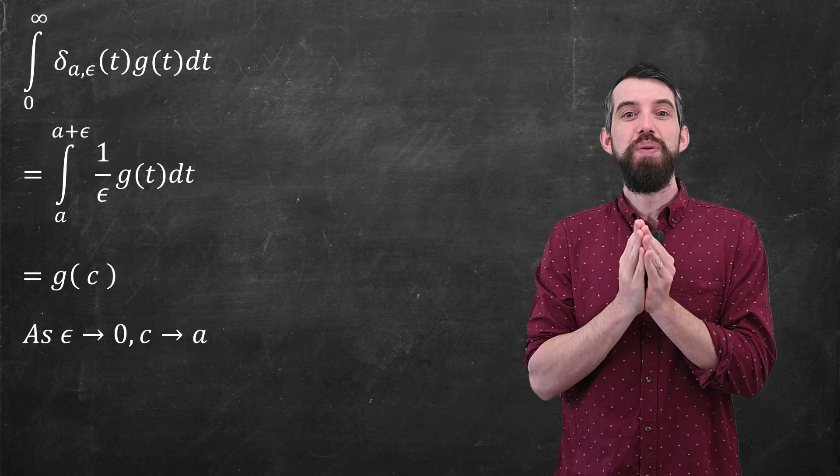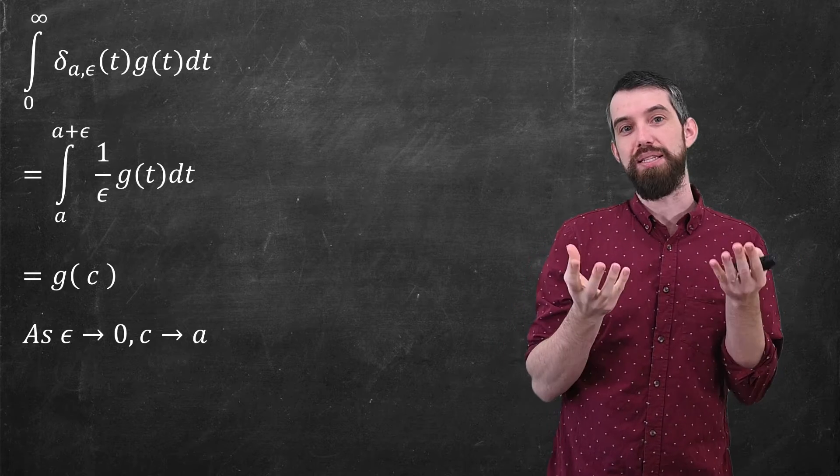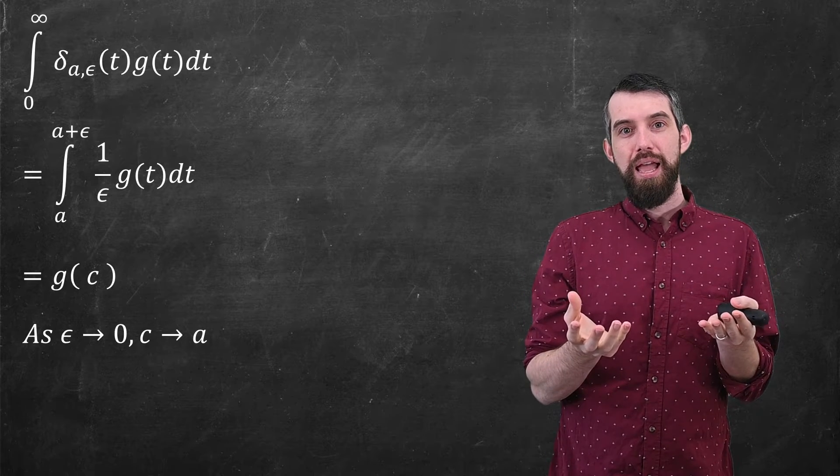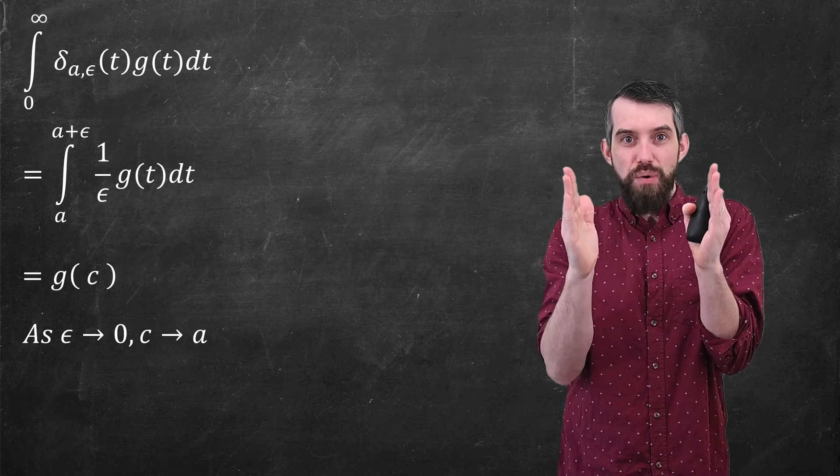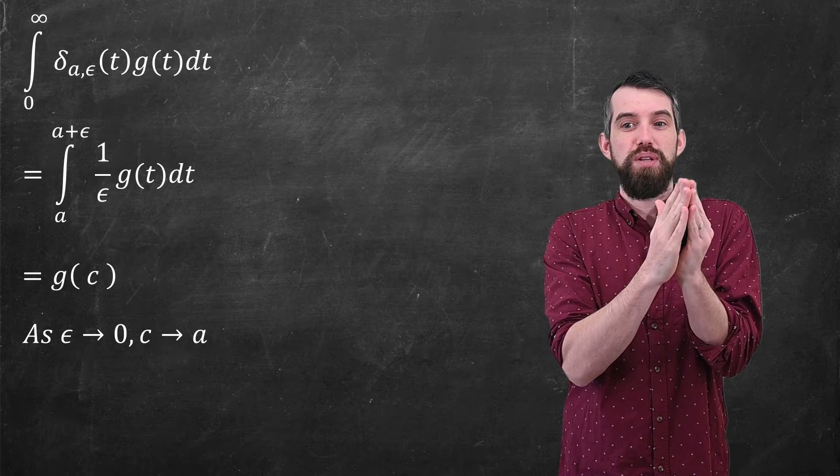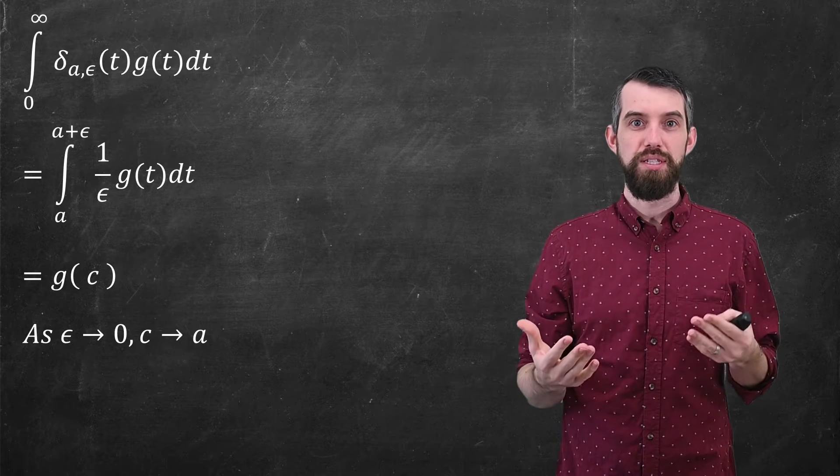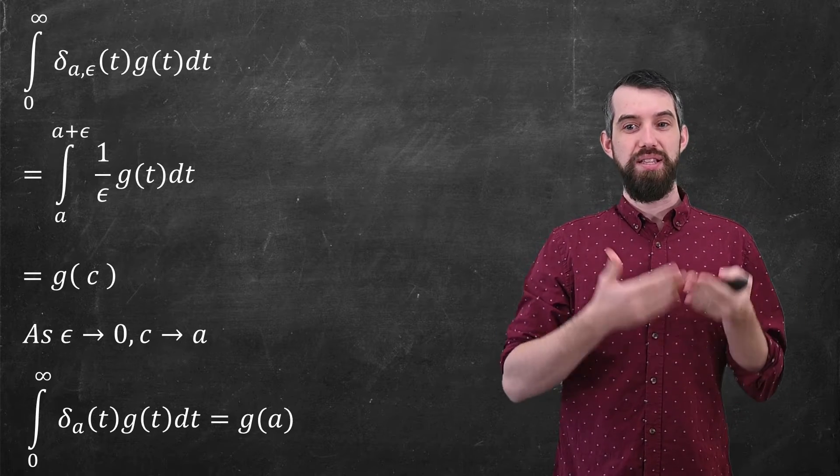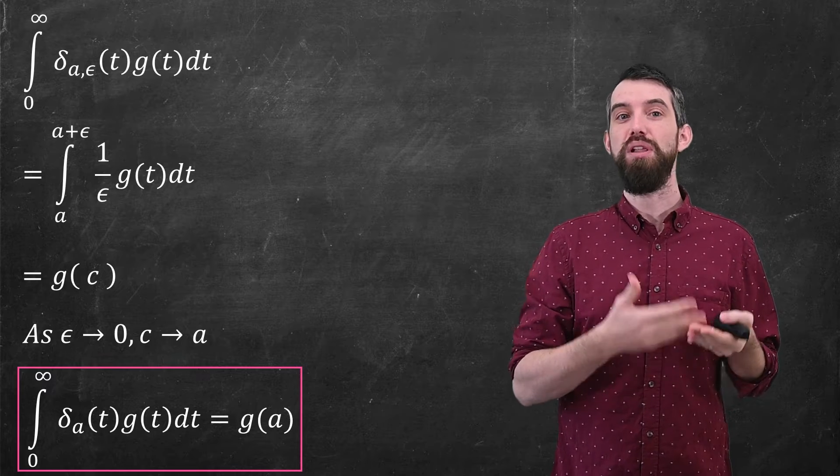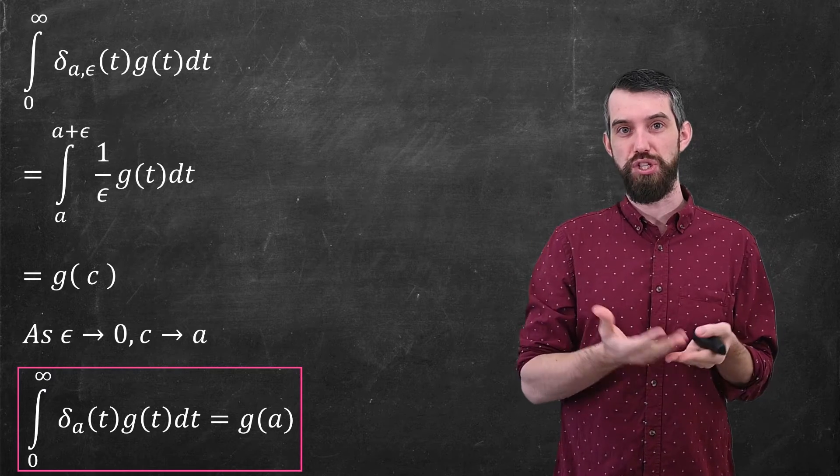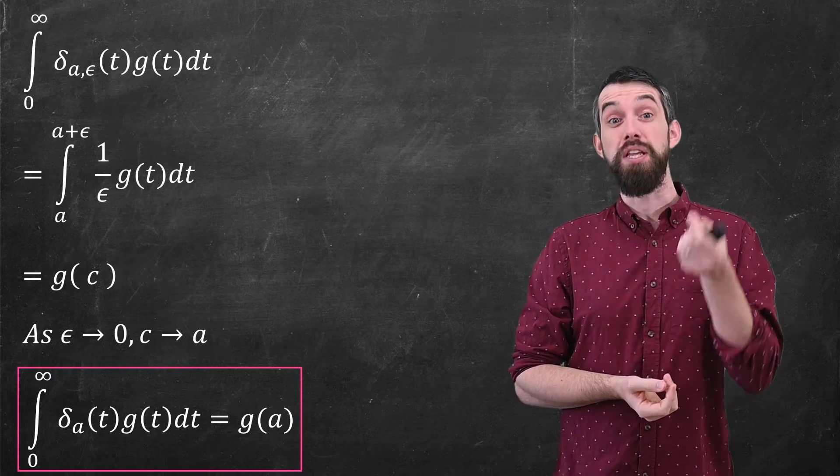Now, there is no epsilon in this expression, except for in the constraint on c. Recall that c had to be inside of the interval a to a plus epsilon. And if the epsilon is going to 0, that means that that interval is getting smaller and smaller and smaller. It's just saying that the c has to go to a. In other words, if I go all the way to the delta a function, I will say that the integral of delta a multiplied by some other function, g(t), is just g(a).